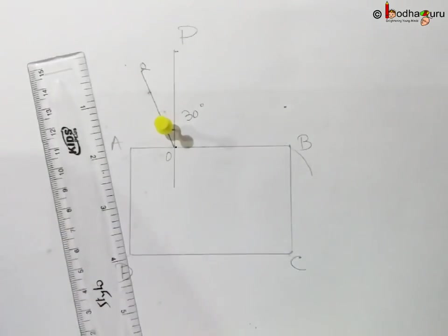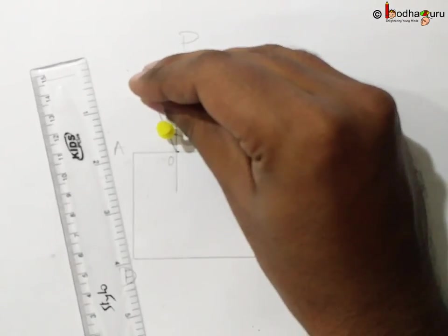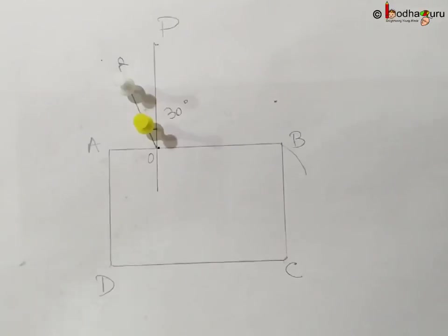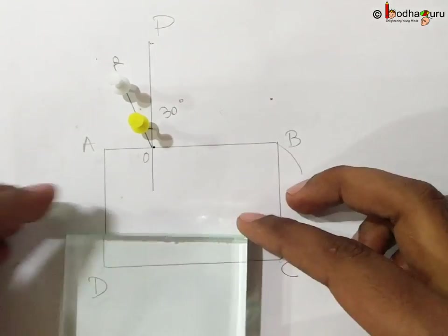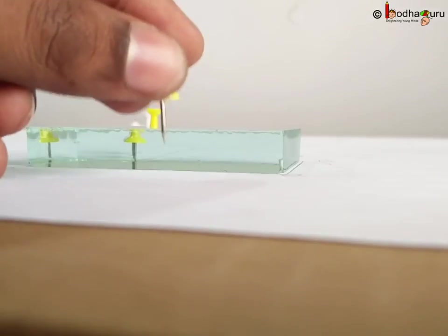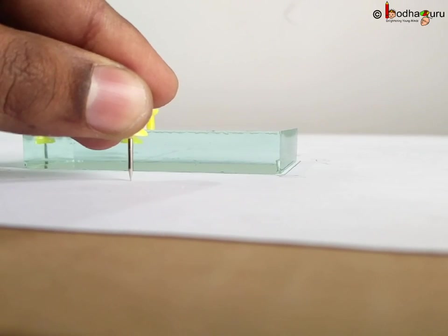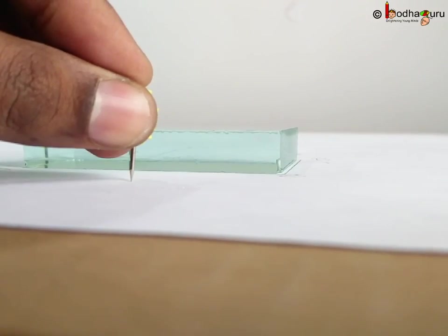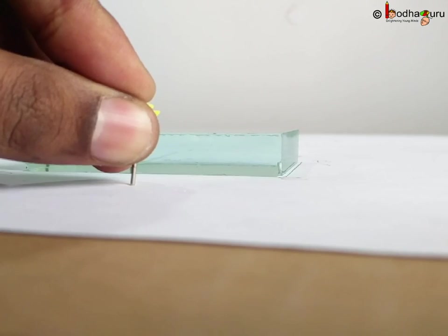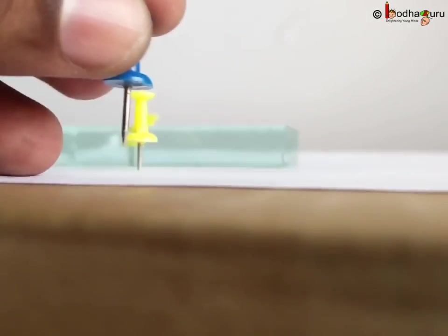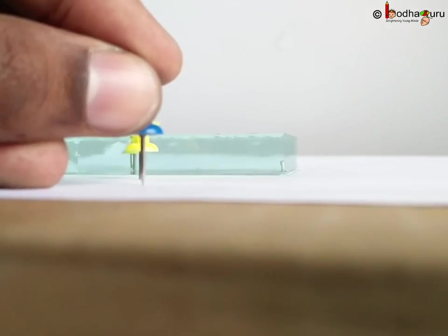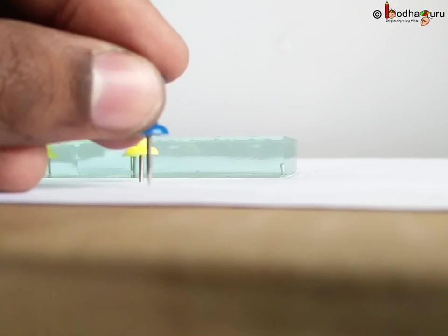We put two pins on OQ and put back the glass slab on ABCD. Now look through the slab and try to put two pins on the other side, that is side CD, such that they appear in the same straight line with OQ.